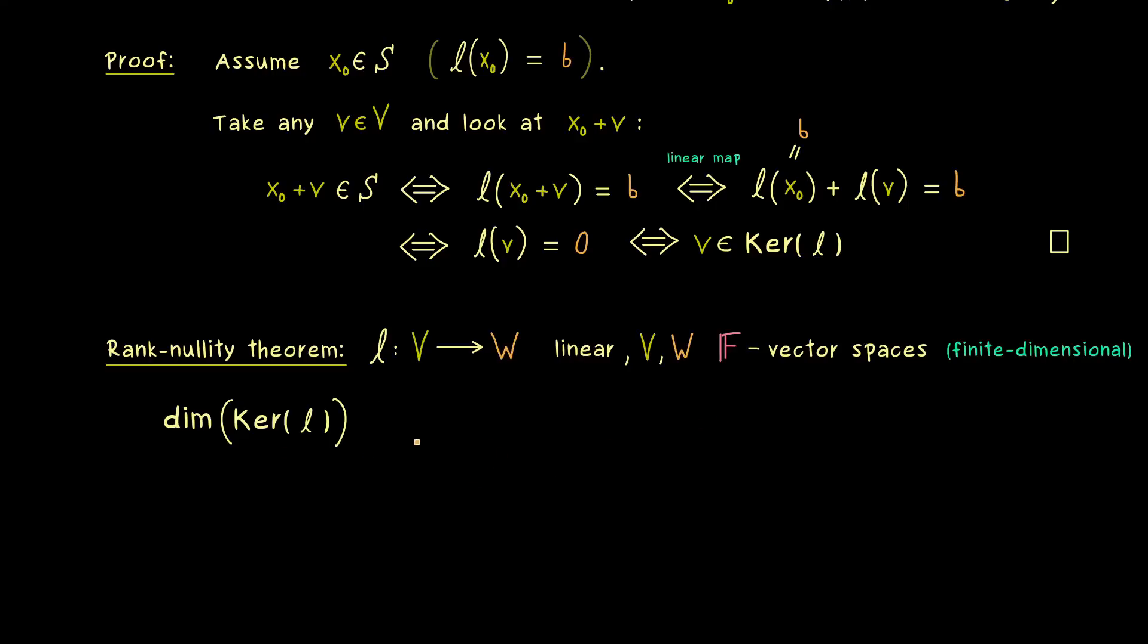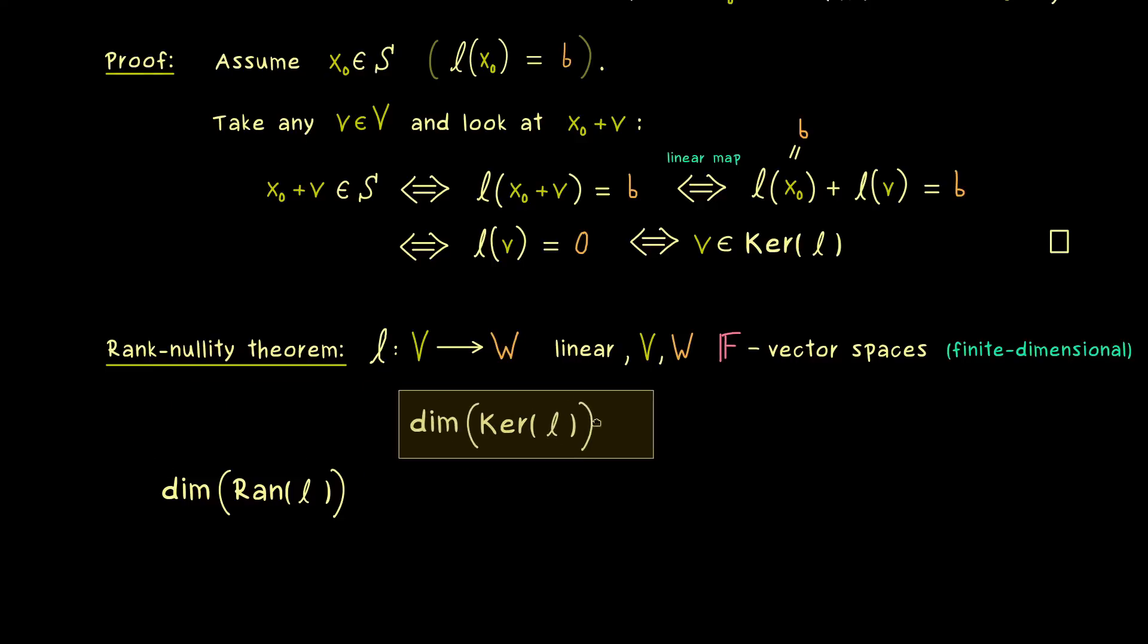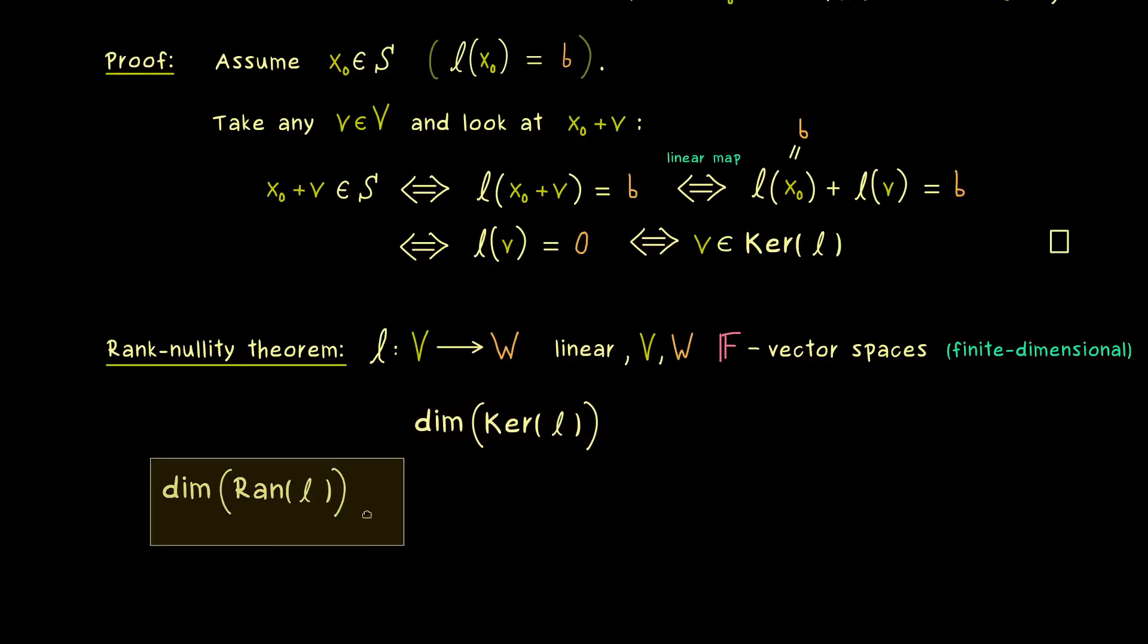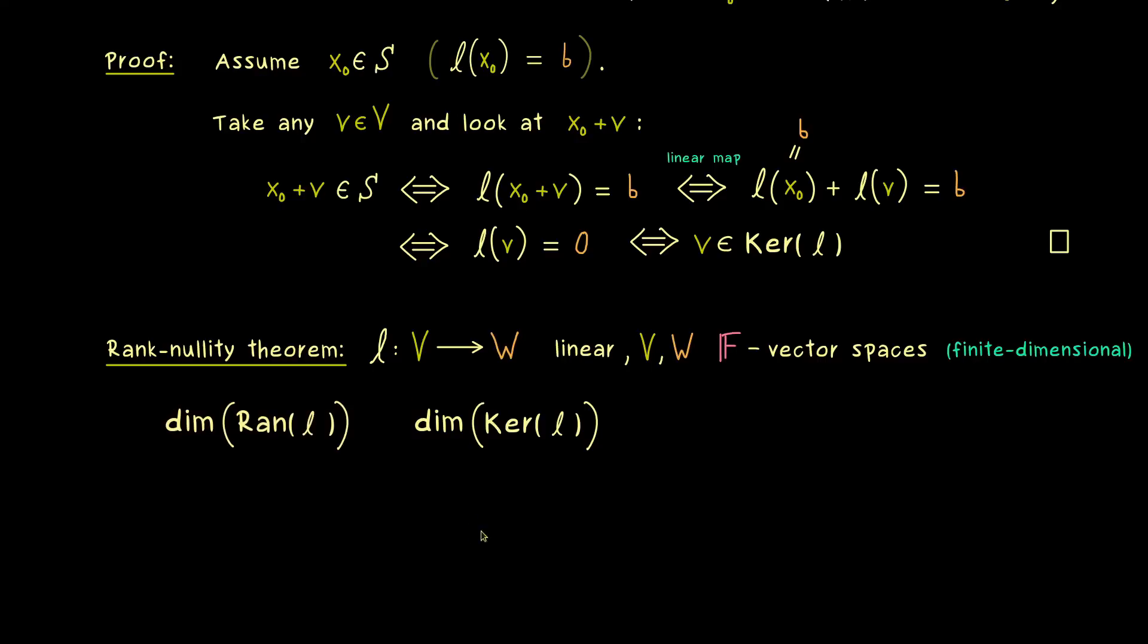And since we talk about dimensions, here the vector spaces that are involved have to be finite-dimensional. In this case, we can definitely add up the finite numbers: dimension of range and dimension of kernel. And there you already know, the dimension of the range is already known as the rank of the linear map. On the other hand, the dimension of the kernel is called the nullity.